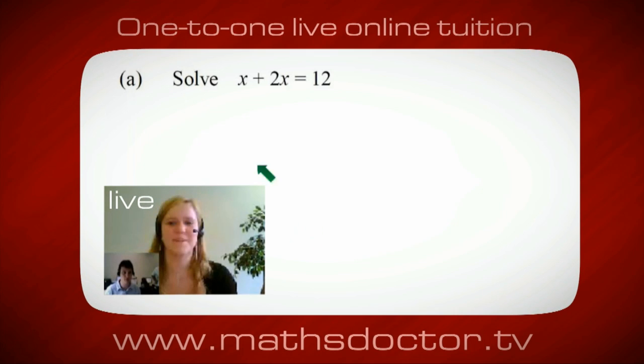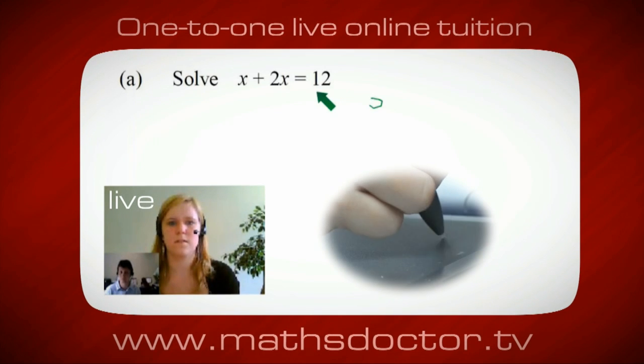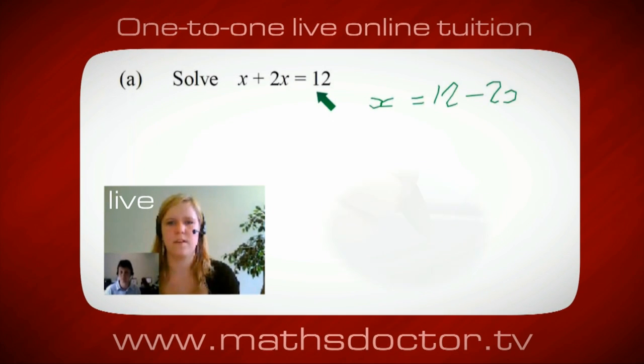So let's have a look at this one. Solve x plus 2x equals 12. So what do you think you do first? Okay, well, I want x on its own, so I would put x equals 12 minus 2x.